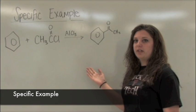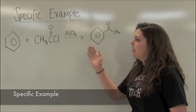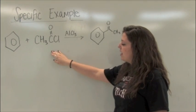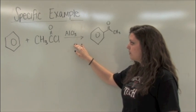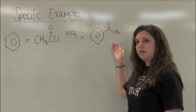As a specific example of the Friedel-Crafts acylation, you take benzene and acetyl chloride, react it with aluminum trichloride to produce acetophenone.